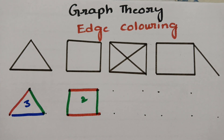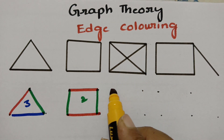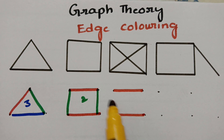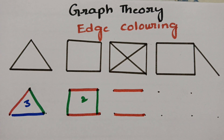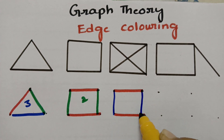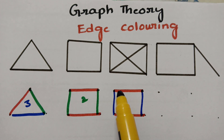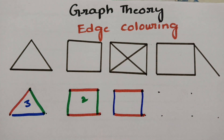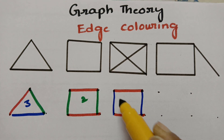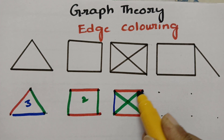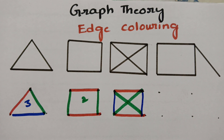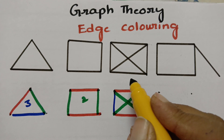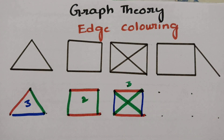For the next graph, if I take red color, I shouldn't use red for adjacent edges, so I am taking another color. As these two are adjacent edges I use different colors, and there are two remaining edges for which I am taking green. I have used 1, 2, and 3 colors, so the chromatic number for this graph is 3.